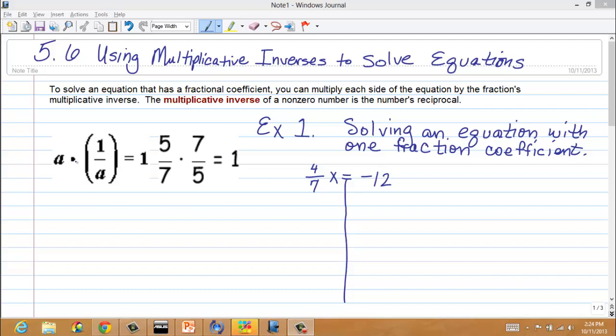So, looking at a regular example with numbers, if we have 5 sevenths, and we decide to multiply it times its reciprocal, that would be 7 fifths, it would equal 1. And how does that work? Because 5 times 7 is 35 divided by 7 times 5, which is also 35. That's how we get 1. So, let's look at an example.